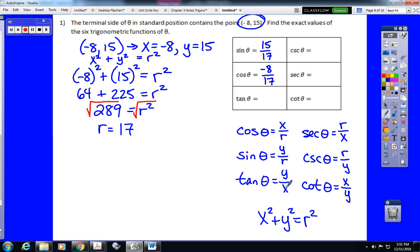For tangent, that's y over x. So y over x would be 15 over negative 8. Cosecant is r over y. That is 17 over 15. Secant is r over x. That is 17 over negative 8. And cotangent is x over y, which would be negative 8 over 15. Done.